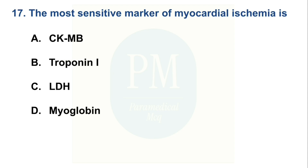The most sensitive marker of myocardial ischemia is: Option A: CKMB, Option B: Troponin I, Option C: LDH, Option D: Myoglobin. The correct option is Option B, Troponin I.